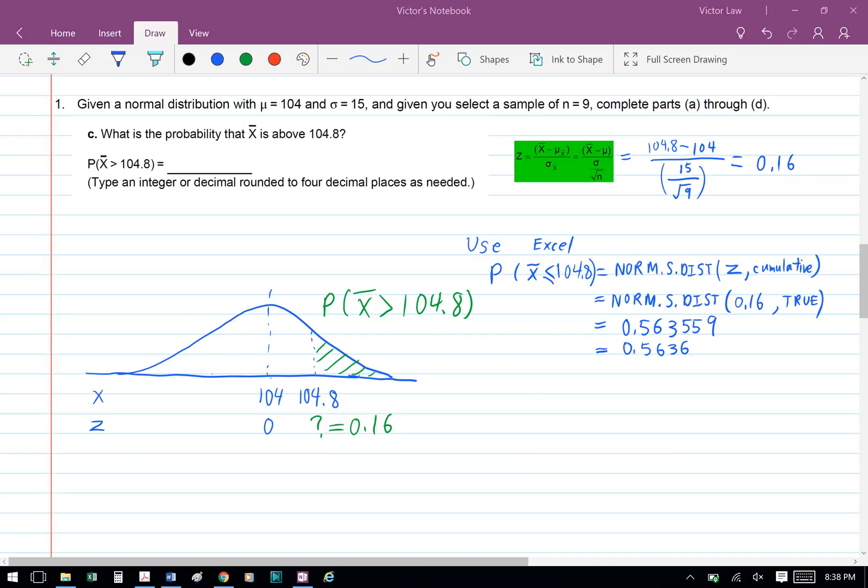To find the z value from a sample, we're going to use the formula x bar minus mu divided by standard deviation over square root n. We're going to have 104.8 minus 104 divided by 15 over square root 9, and we're going to get 0.16.